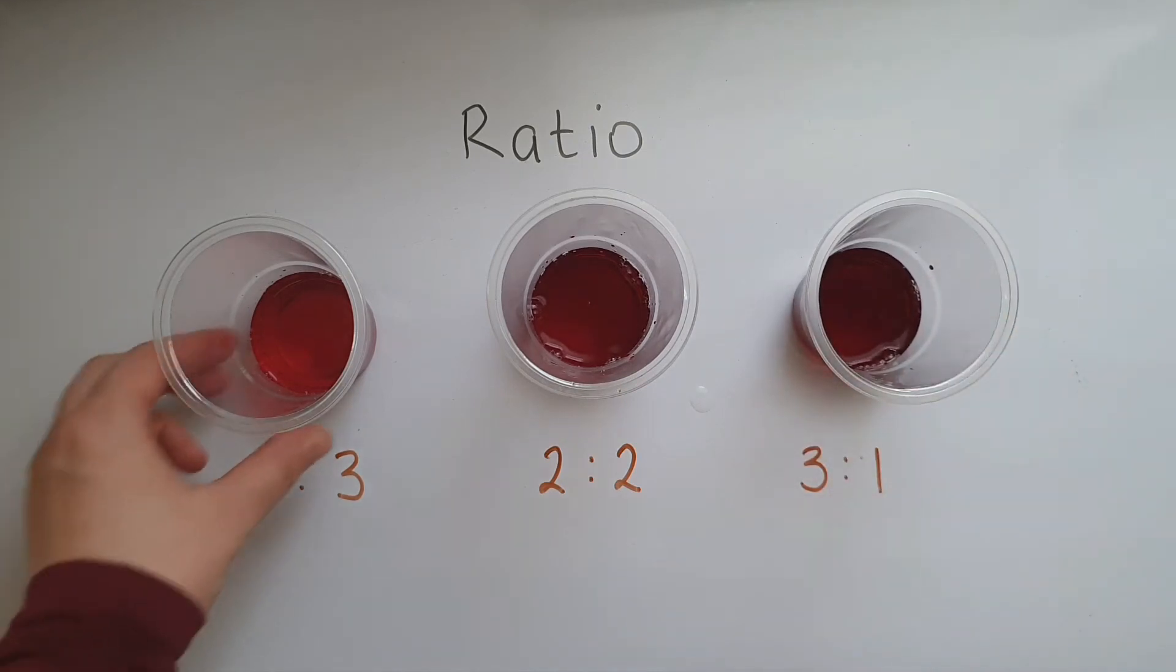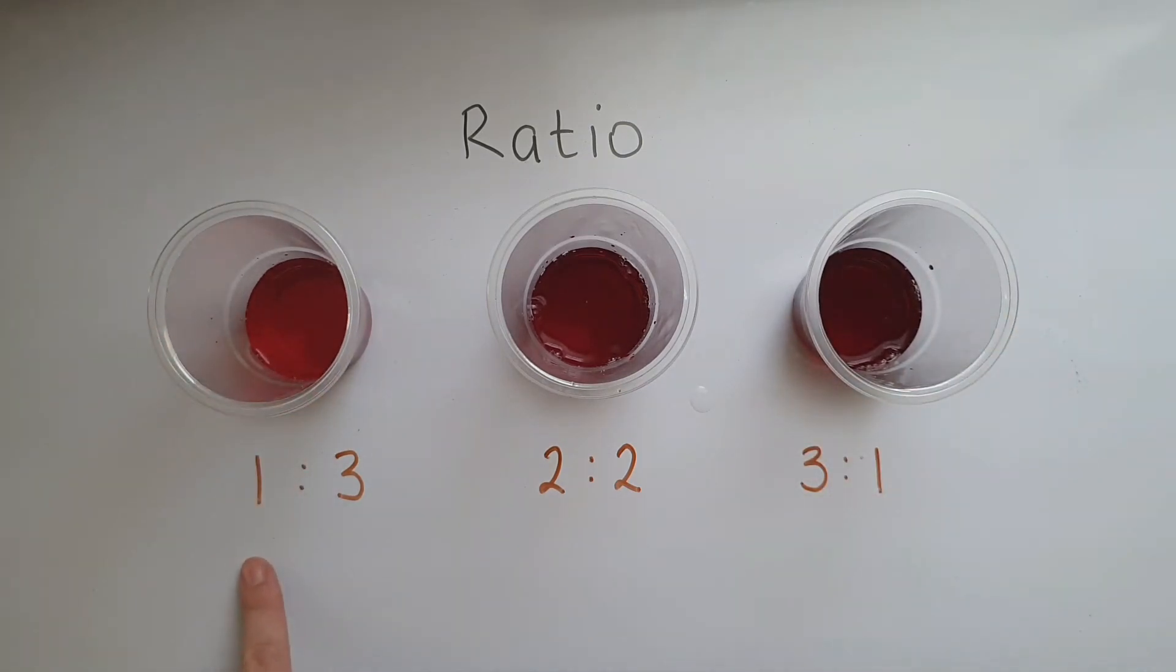So for this one, the ratio of squash to water is one to three. Here the ratio of squash to water is two to two. And here it is three to one. What do you notice?